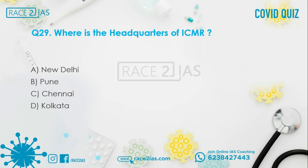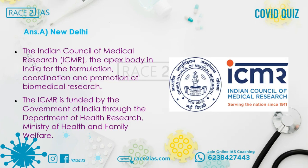Question number 29: Where is the headquarters of ICMR? Option A: New Delhi. Option B: Pune. Option C: Chennai. Option D: Kolkata. The right answer is Option A, New Delhi. The Indian Council of Medical Research (ICMR) is the apex body in India for the formulation, coordination, and promotion of biomedical research. It is funded by the Government of India through the Department of Health Research, Ministry of Health and Family Welfare.